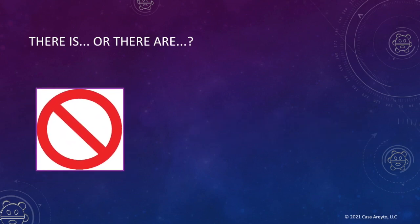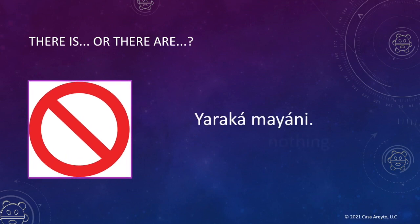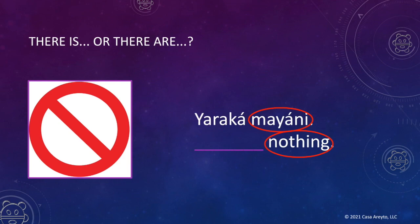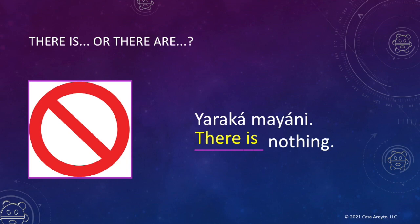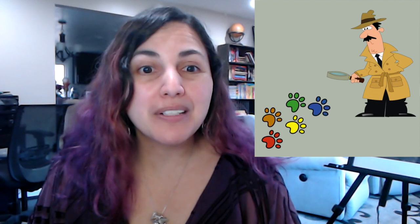Let's look at the next example — this is a tricky one too. There is only one word after yara ka, and that word is mayani, meaning 'nothing.' Which rule do we need to follow? Well, if it's nothing, that's one or less, right? So yara ka means 'there is' in this sentence. Now let's read the sentence aloud: Yara ka mayani. There is nothing. We were able to use context clues — that is, words in the sentence — to help figure out the meaning of yara ka.